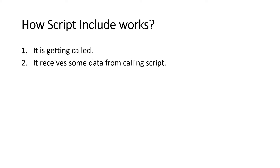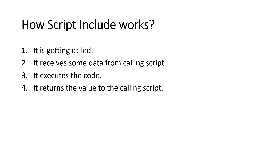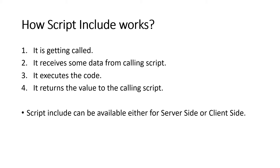The code executes and then returns the value to the calling script — that's how Script Include works. For example, if you want to write complex logic in a business rule with many lines of code, you can put that code into one or two functions inside a Script Include, call them from the business rule, pass the values, and Script Include executes the code and gives back the result. Also remember: a Script Include is available either from the server side or the client side — not both at the same time.